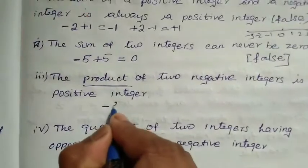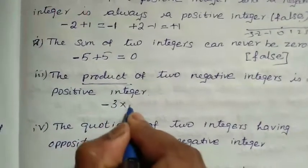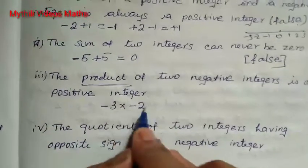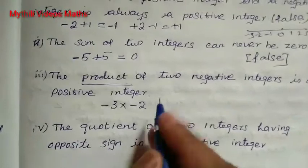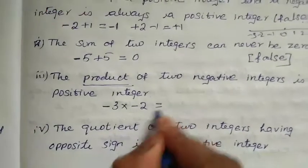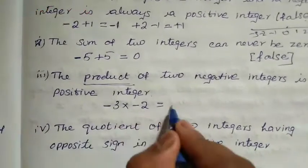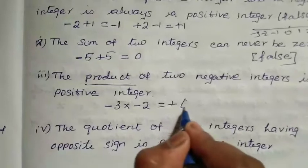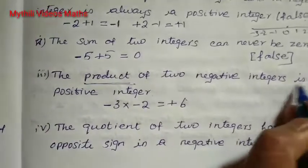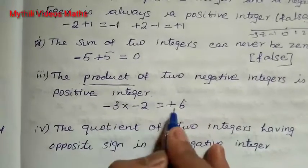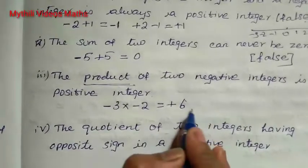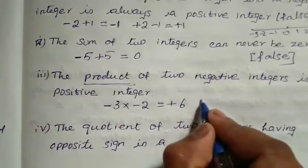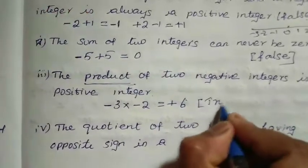For example, I am taking minus 3 into minus 2. These two are negative integers. When I multiply them, minus into minus is plus, and 3 twos are 6. So the result is positive 6. They are saying it is a positive integer — and it is positive only. Therefore this statement is true.